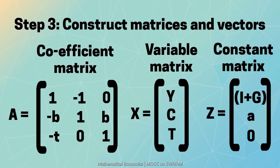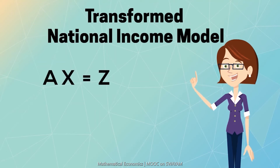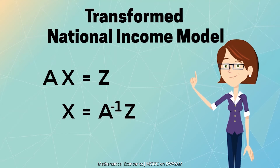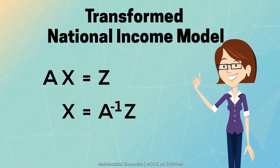Thus, the three equations have been transformed into a single equation in matrix form as A x is equal to z. Here, A is a three by three matrix, x is a three by one vector and z is a three by one vector.